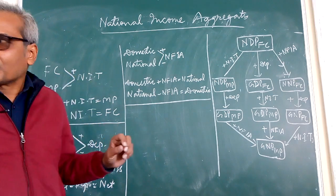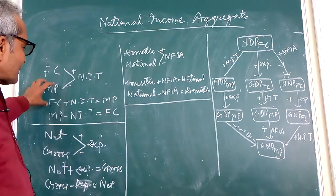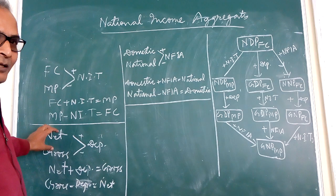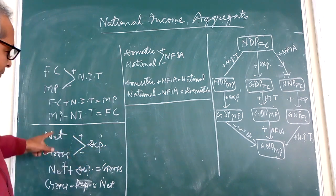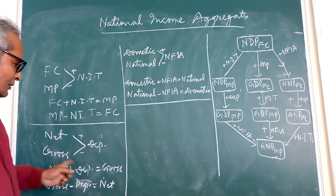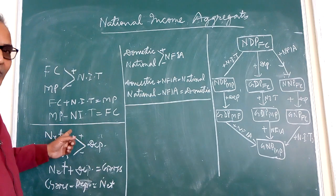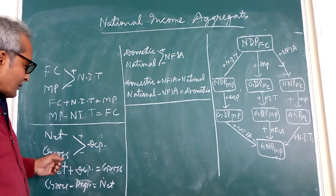So the NIT is one which differentiates between factor cost and market price. Similarly net and gross. Differentiator is depreciation. When we add depreciation in net we get gross and moving from downwards if we subtract depreciation from gross we get net.